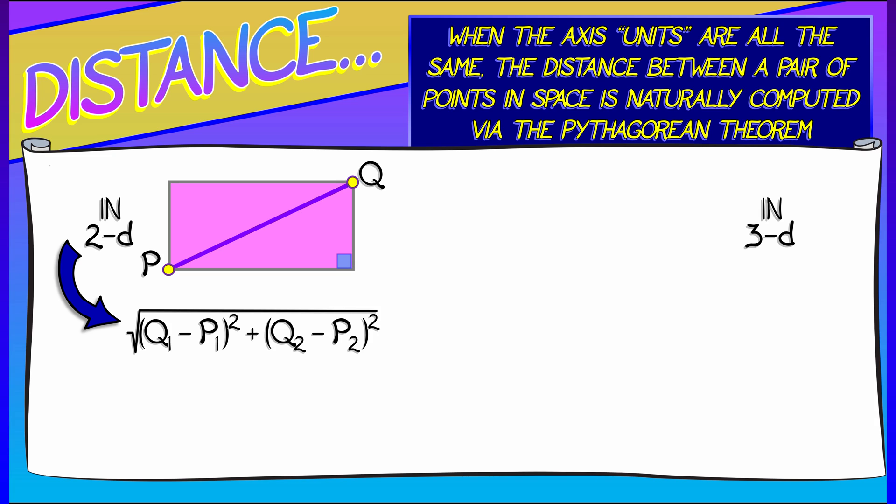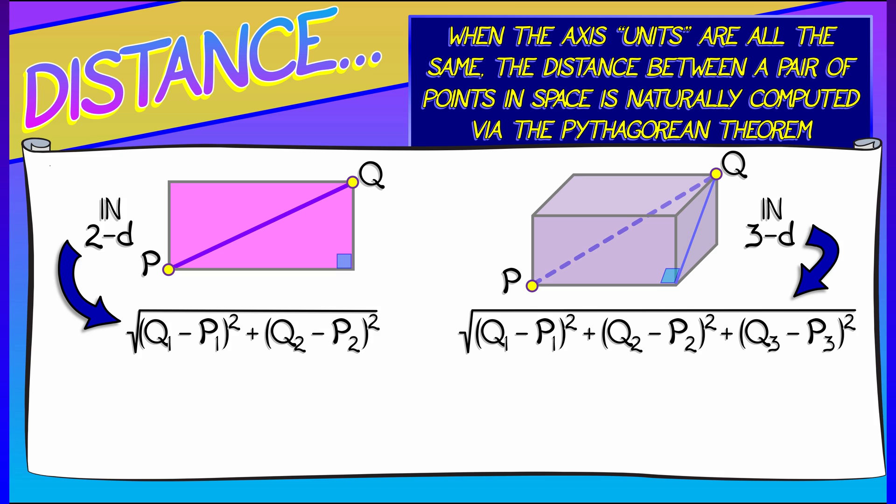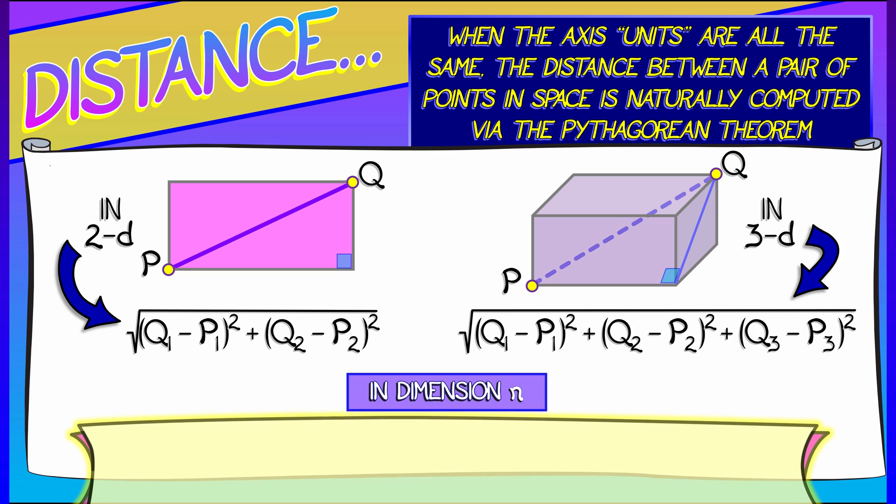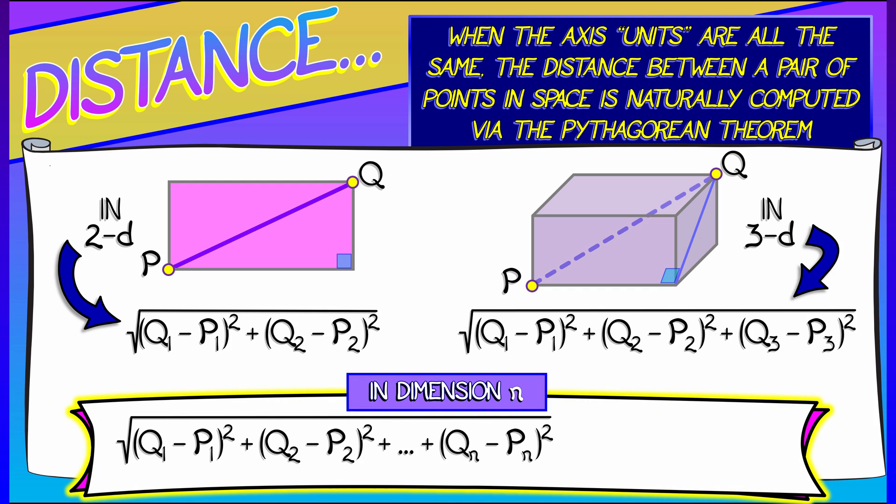And in dimension three, this generalizes using again the sum of the squares of the differences. But now there's three differences that we have to work with. The first coordinate, the second coordinate, the third coordinate.